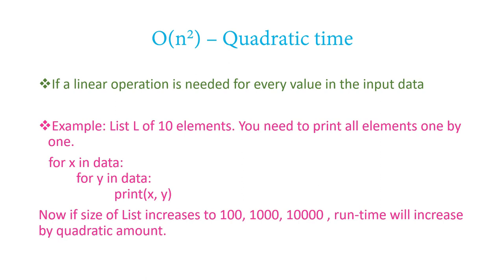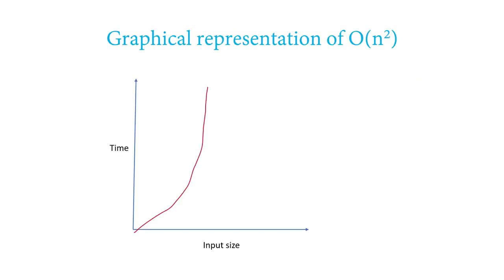As you increase the size of your list from 100 to 1,000 to 10,000, your run time increases by a quadratic amount of time. This is Big O of N squared. In its graphical representation, as you increase the input size, the time increases tremendously. If you make it order of N cubed, the curve goes even steeper.